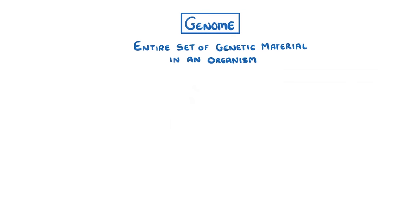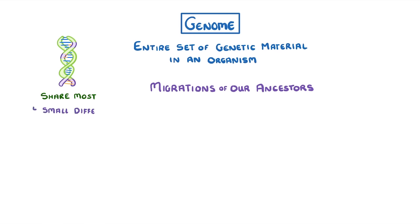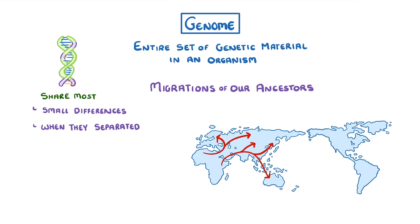Another thing that we can do with genomes is trace the migrations of our ancestors. For example, we can see that all humans share most of their genome, but the small differences between different populations can tell us when they separated, such as when humans left Africa or when humans first travelled to North America.